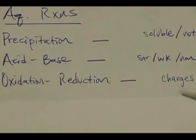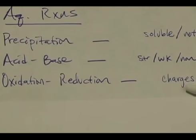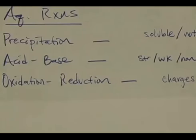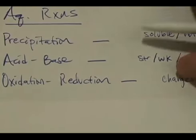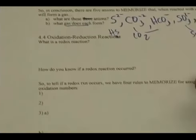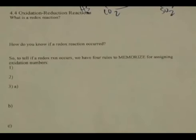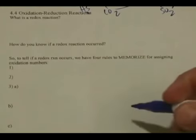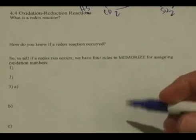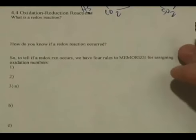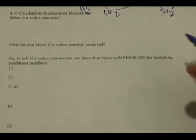The third type of reaction we're going to look at in this chapter are called oxidation-reduction reactions. These have to do with a change in the charge of the ions — a change in the charge of the ions from the reactants to the products. So make sure you have your notes out right here, and we'll go to section 4.4, Oxidation Reduction Reactions. A redox reaction is one where we have a change in charge from reactants to products.